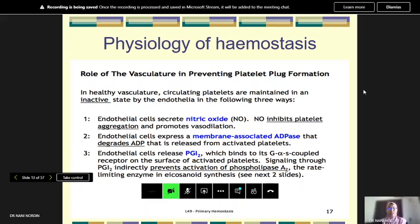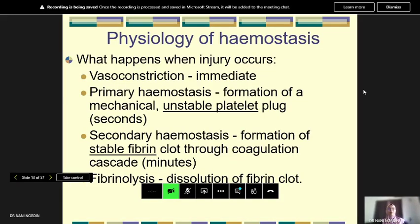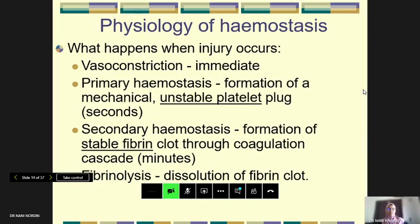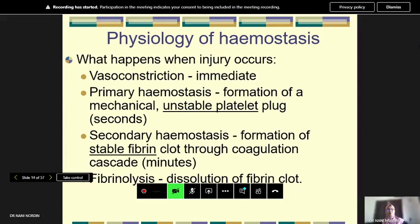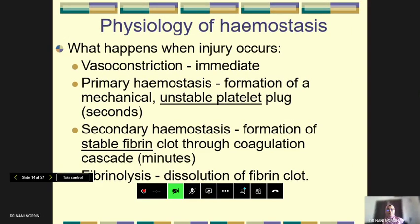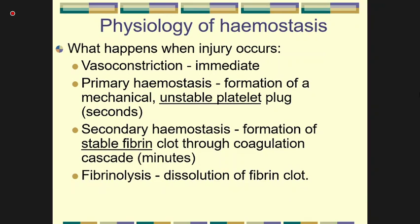When there is injury to the vessels, four important steps occur. Immediately there is vessel constriction. Then primary hemostasis starts, forming an unstable platelet plug — this process takes a few seconds. This is followed by secondary hemostasis, in which stable fibrin forms on top of the unstable platelet plug, which takes minutes.